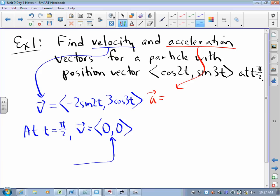What does that mean? That means that the particle is at rest. The only way that a particle can be at rest is if both components of the velocity vector are 0. So if you're asked when is this particle at rest, you set the derivative of x with respect to t equal to 0, the derivative of y with respect to t equal to 0.